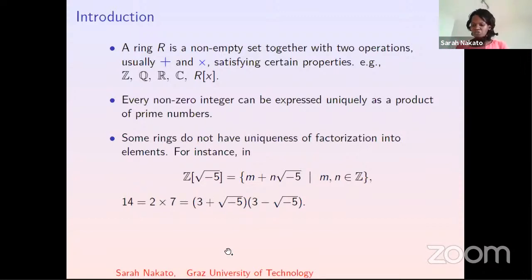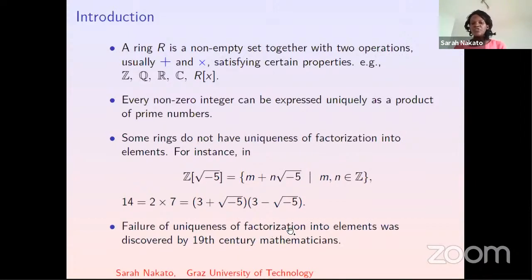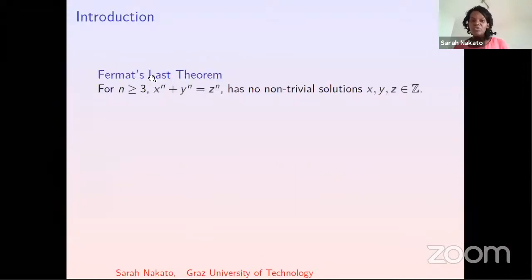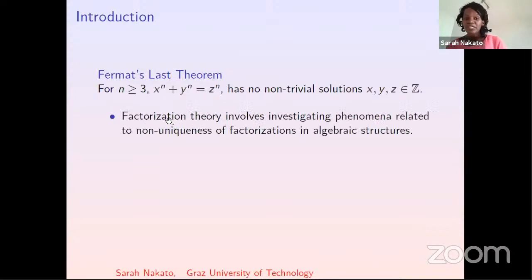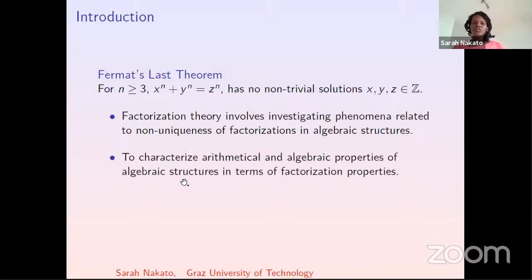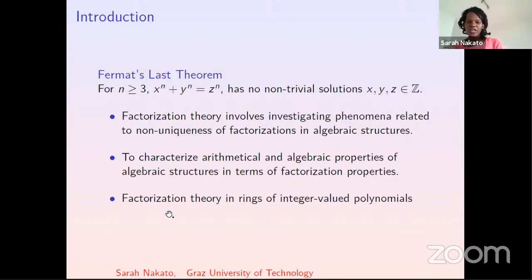This non-uniqueness of factorization stems back to the 19th century. The failure of uniqueness of factorization into elements was discovered by 19th century mathematicians in the initial attempts to solve Fermat's Last Theorem. The initial proofs wanted to use factorization in rings of integers of cyclotomic fields, but it was Kummer who observed that these rings in general do not have unique factorization into elements. This hindered the initial attempts but gave birth to factorization theory, which involves investigating phenomena related to non-uniqueness of factorizations in algebraic structures.